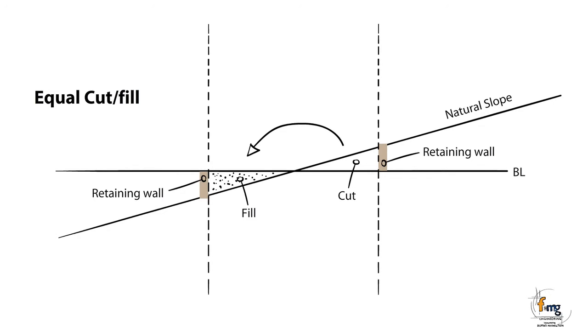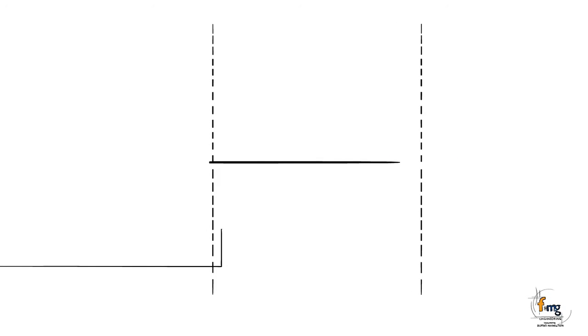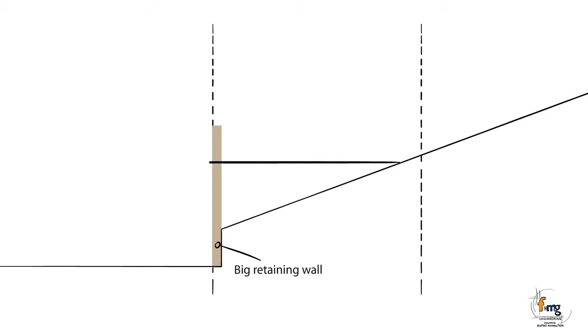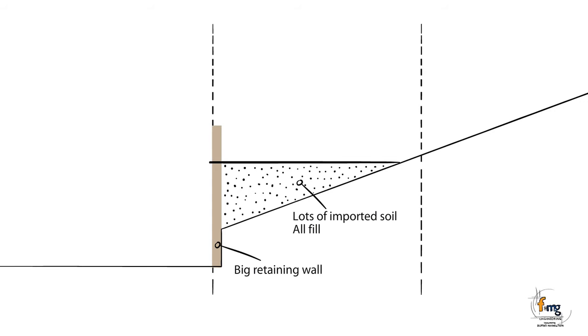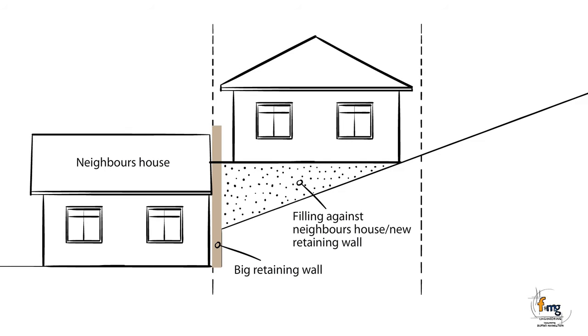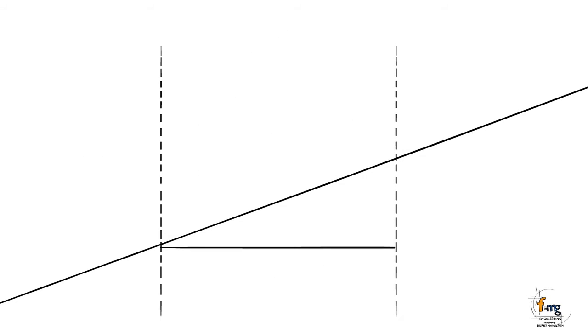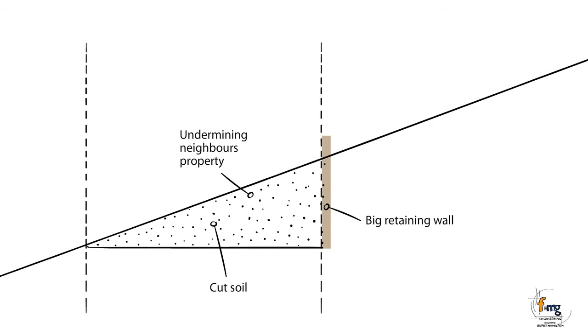Choosing a higher bench level could mean an increase in cost due to the importing of soil. Neighboring properties also have to be taken into consideration when choosing a bench level. Choosing a lower bench level could mean carting away of soil and/or increased heights of retaining walls. Choosing the wrong bench level could lead to damage of neighboring houses.